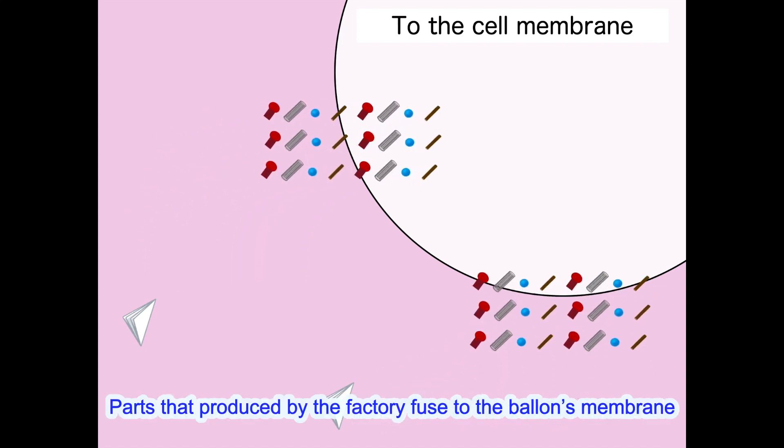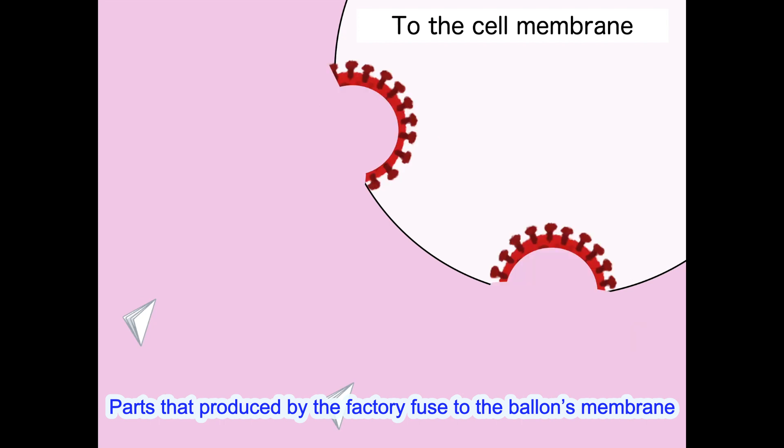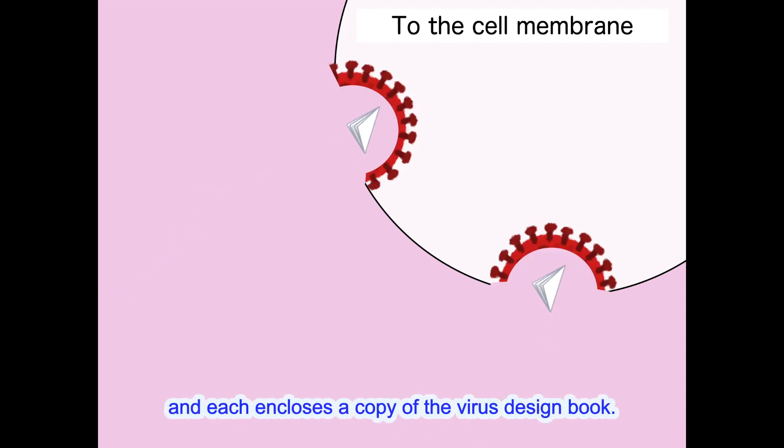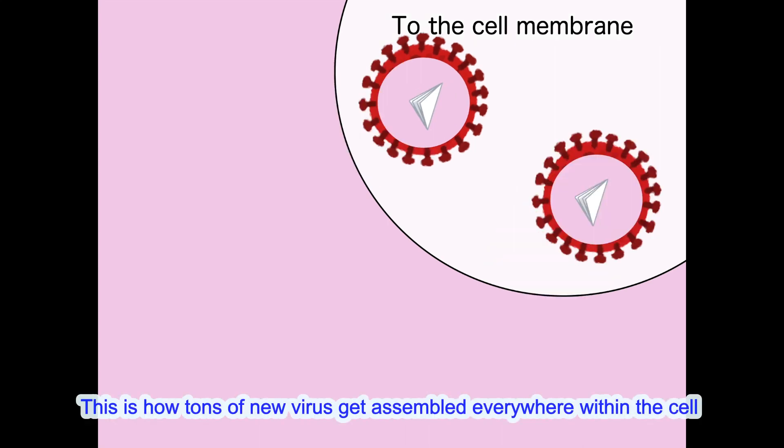Parts that are produced by the factory fuse to the balloon's membrane. Each encloses a copy of the virus design book. This is how tons of new viruses get assembled everywhere within the cell.